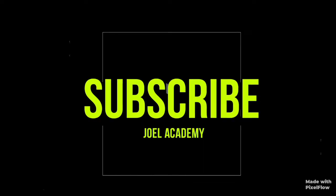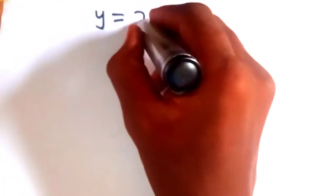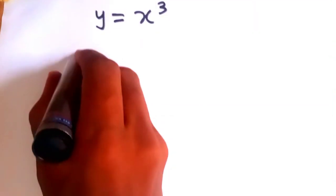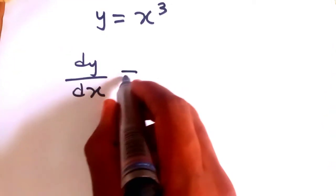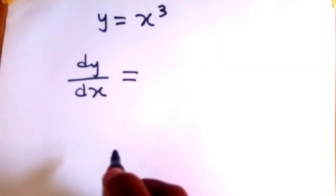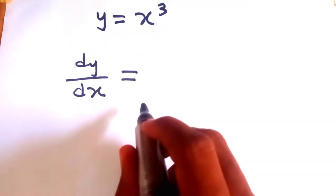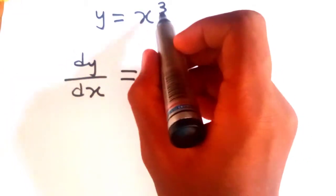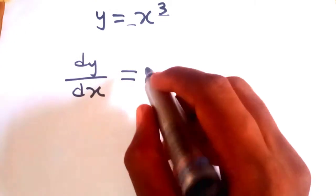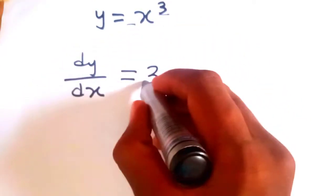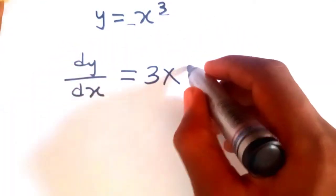So let's see some problems we can use this to solve. We have a function giving us y equal to x cubed, and I have to find the derivative of this function. So dy over dx — remember I told you that the coefficient of our derivative will be the product of the power and the coefficient of the function.